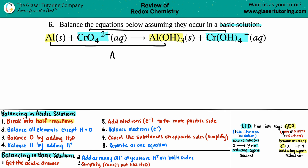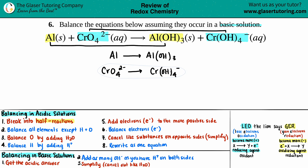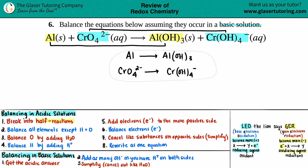So we have: Al → Al(OH)₃, and CrO₄²⁻ → Cr(OH)₄⁻. Notice I did not write any states — I didn't write that aluminum was solid or aqueous — because it's just too much writing. At the end, when we get the final answer, we can add the states back in. Keep it simple: don't add states for now.